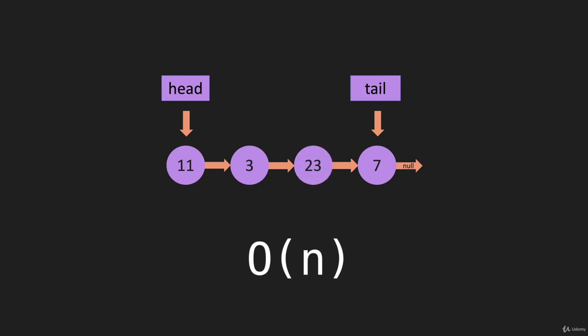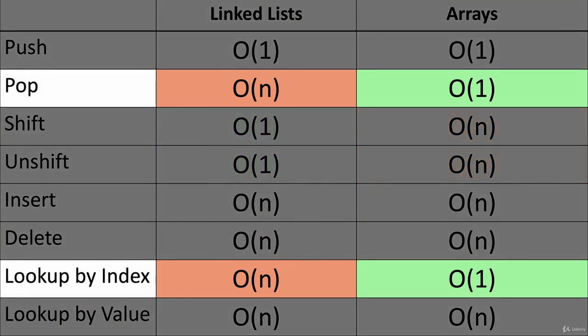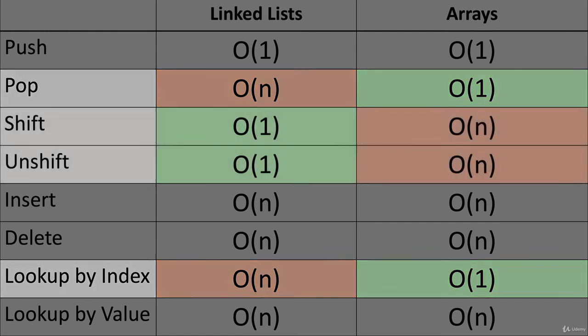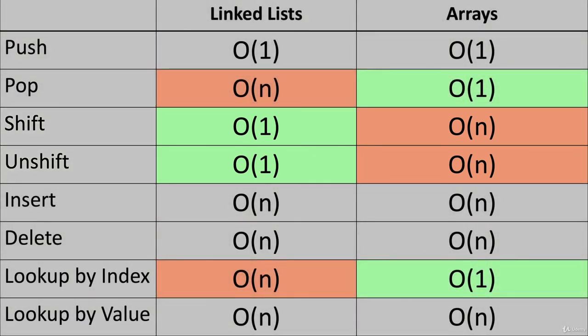This is a difference between linked lists and arrays, because with arrays we can go to the index in O(1). Let's bring up a table that shows all of these operations and how linked lists and arrays compare. The gray items are the same for both. Pop and lookup by index are O(1) for arrays but O(n) for linked lists. Adding and removing from the beginning — shift and unshift — are better for linked lists. It just depends on what you're going to be using your data structure for. I'll include this table as a PDF attachment so you can download it as a reference. And that is our overview of linked list Big O.